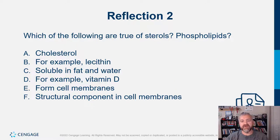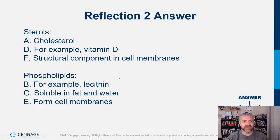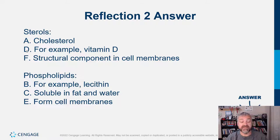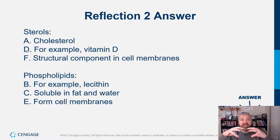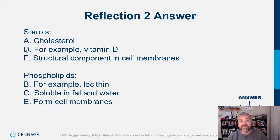Review: sterols — cholesterol is a sterol, vitamin D is an example of something made from cholesterol, and it's a structural component of cell membranes. Phospholipids — lecithin is found in the diet as an emulsifier, phospholipids are soluble in fat and water because the phosphate head likes water and the fatty acid tails hate water, and phospholipids form the phospholipid bilayer of our cell membranes.